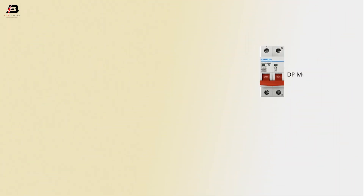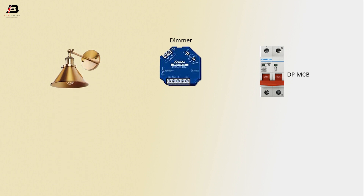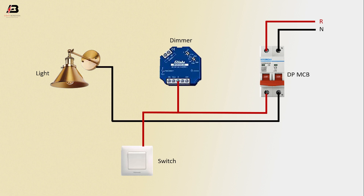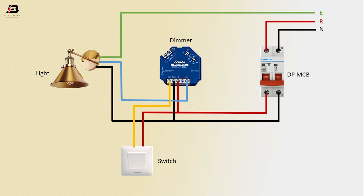Let's start the DP MCB circuit dimmer light switch connection. Phase connection to DP MCB, neutral connection to DP MCB, output connection from DP MCB to switch input. Phase connection to dimmer output, neutral connection from DP MCB to light input neutral, connection to dimmer output. Connection from dimmer to switch, arcing connection input to light. This circuit is now ready.